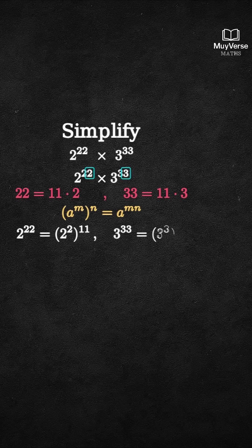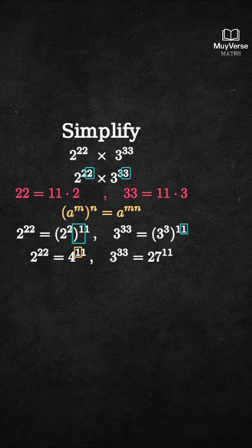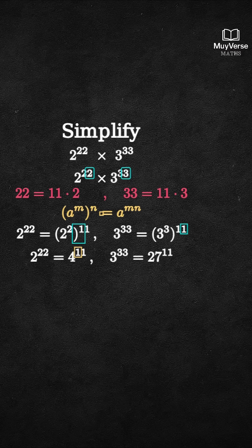Step 4. Evaluate the small inside powers. 2 squared equals 4, and 3 cubed equals 27. Step 5. Both factors are raised to the 11th power, so multiply the bases first and keep the common exponent 11. That gives (4 × 27)^11.